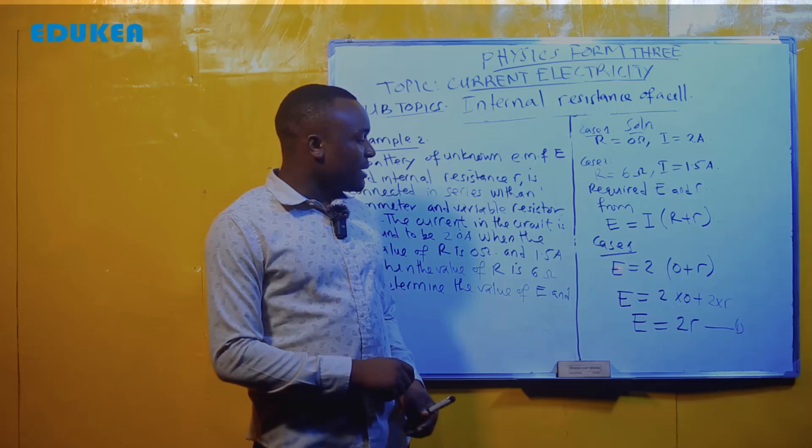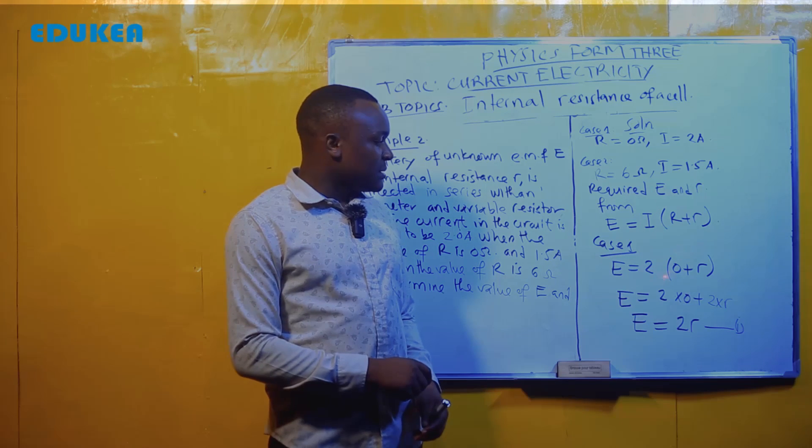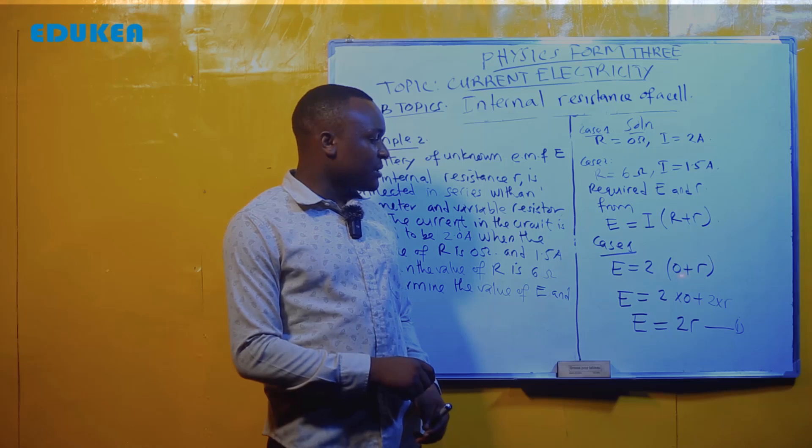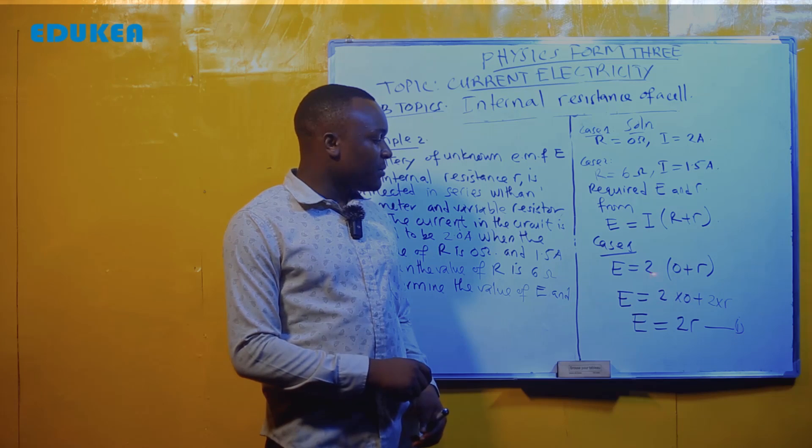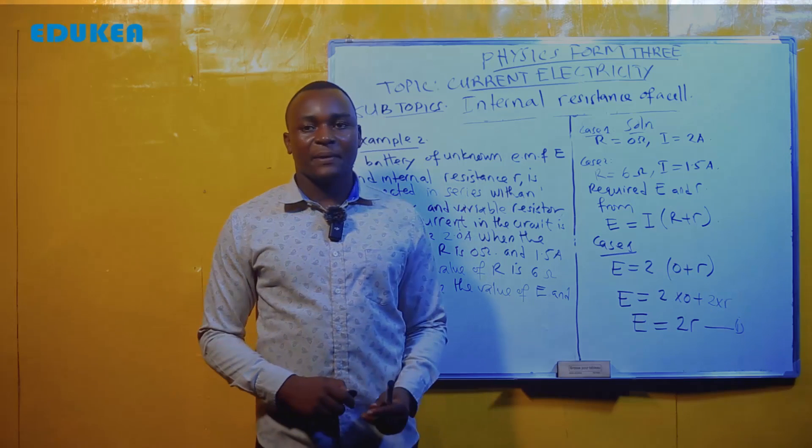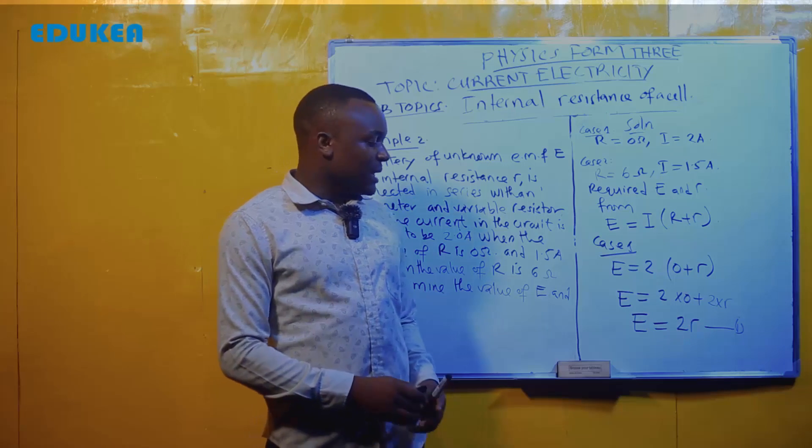Kwa kesi 1, E equals I into bracket R plus r. Lakini value ya current tunayo ni 2, samani R ni 0 plus r internal resistance. Kwa 2 utafungwa mabano, 2 mara 0 utapata 0, 2 mara r utapata ni 2r. Kwa equation ya kwanza itakuwa ni hiyo.